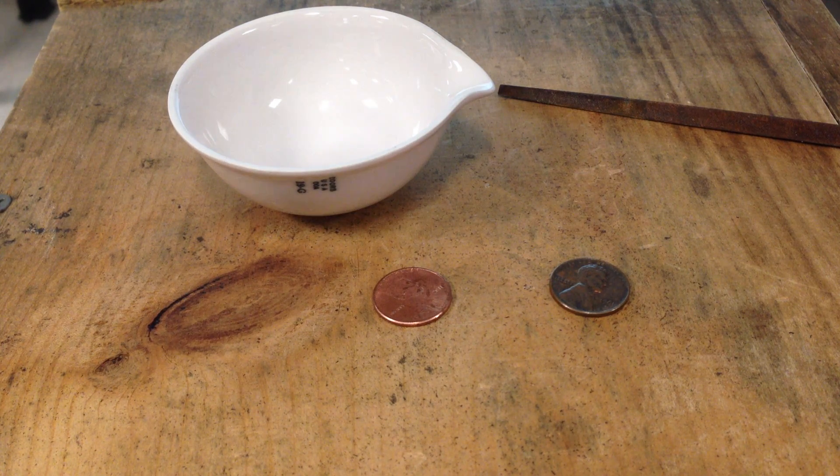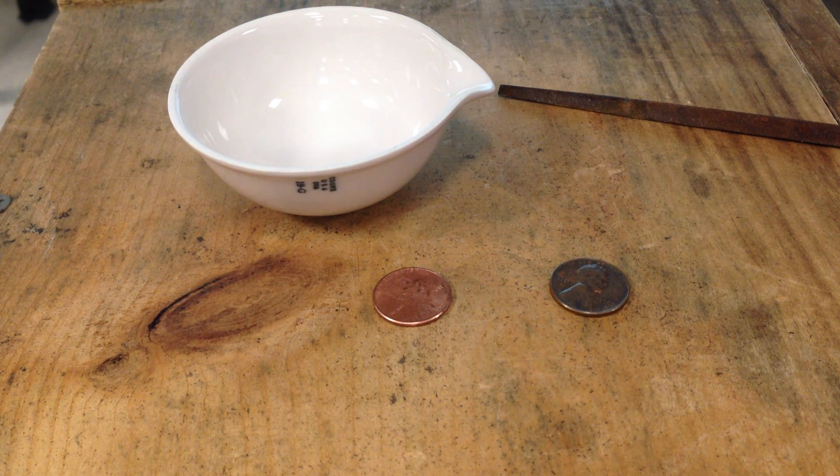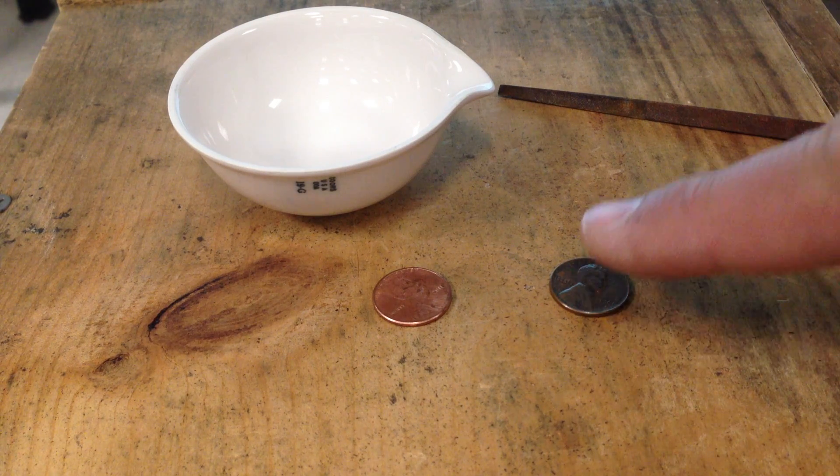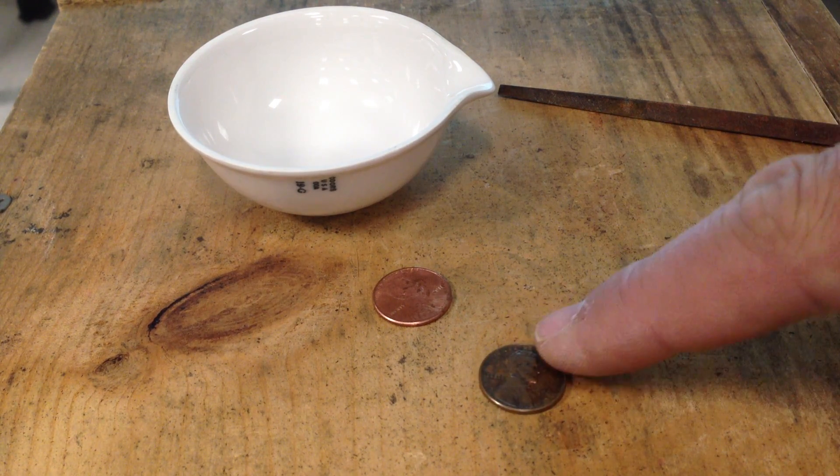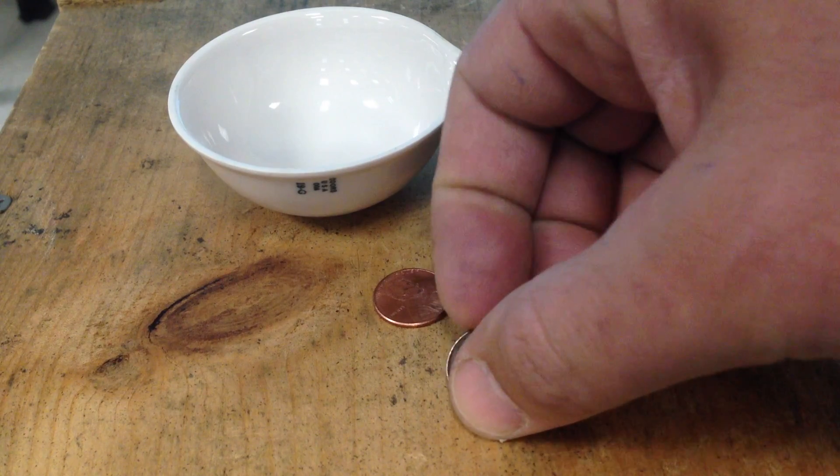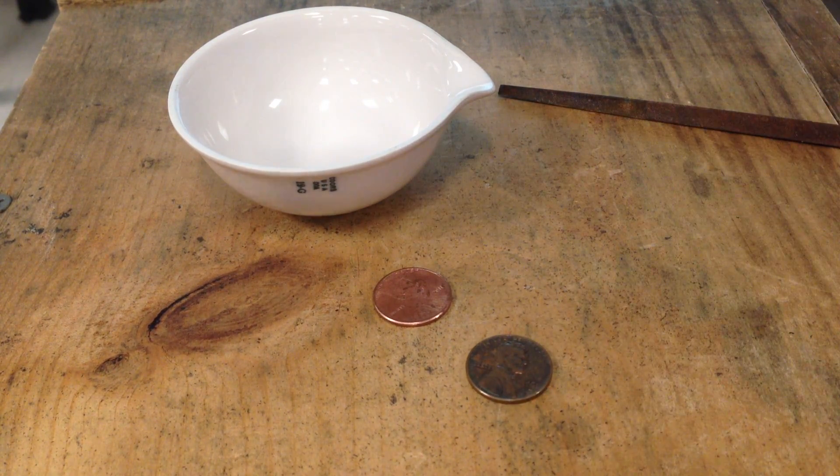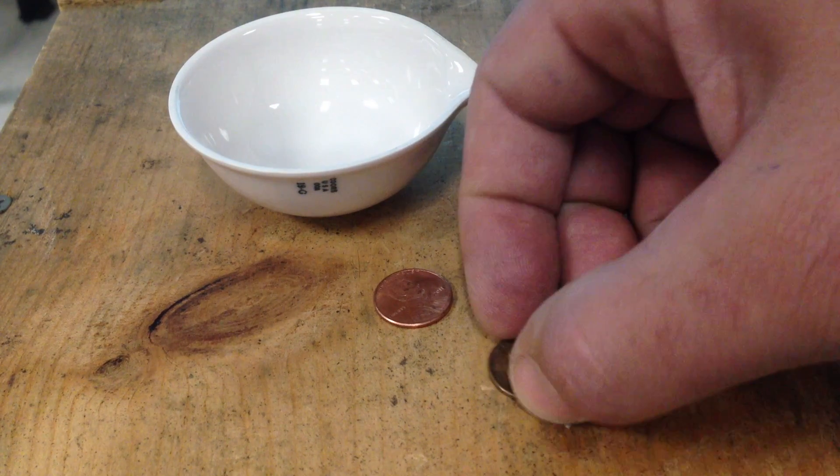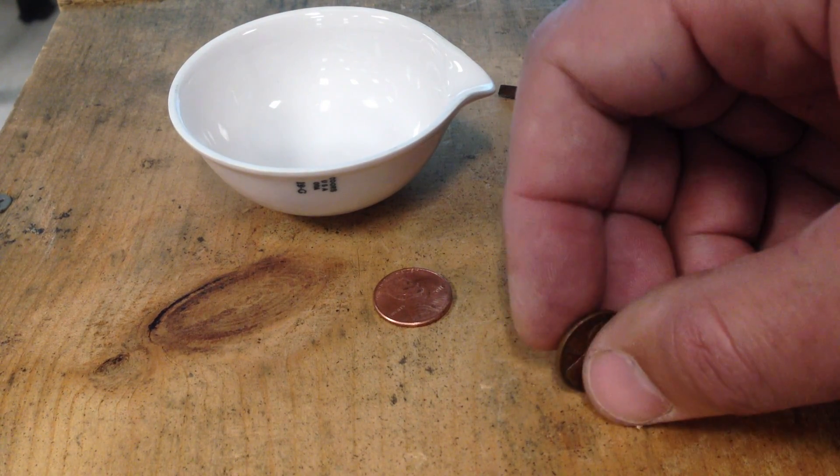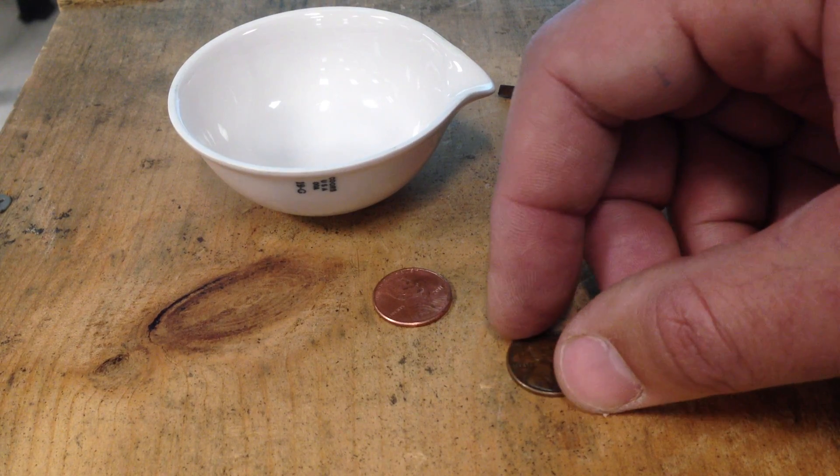They have changed the penny from the old version. This is a pre-1981 penny, which is made up of approximately 95% copper and about 5% zinc. And it's definitely more dense and heavier.